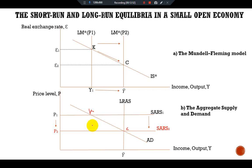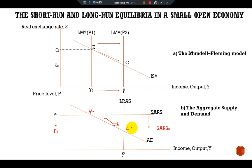The speed of transition between the short-run and long-run equilibrium depends on how quickly the price level responds. The price level adjusts to restore the economy to its natural level of output. Our central goal is to understand how policy influences point K (short-run equilibrium) and point C (long-run equilibrium) — any policy change requires considering both effects.